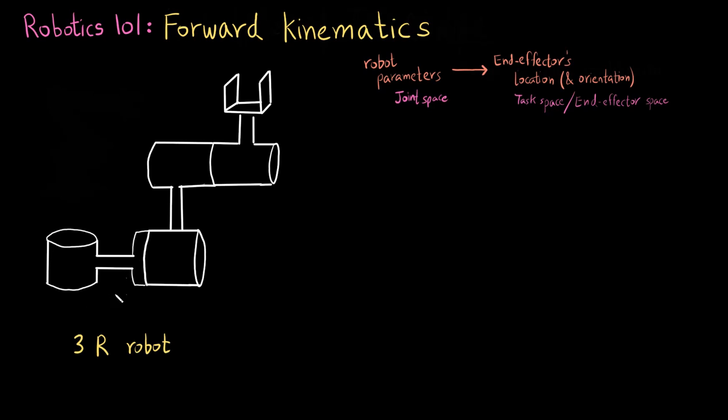Here I have a 3R robot which has three revolute joints, so it is a three degree of freedom robot. This is the kind of robot that you can expect to see in an industry where the application is such that there are two conveyor belts and you need to pick and move objects from one conveyor belt to the other. So in the very simplest of cases you might be able to see this kind of a robot — a 3R robot.